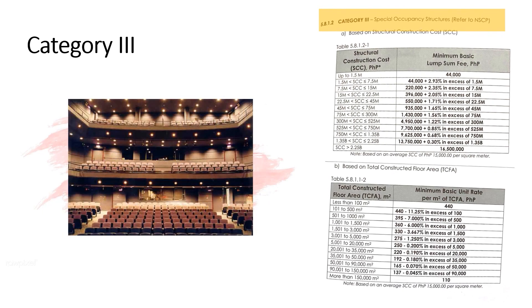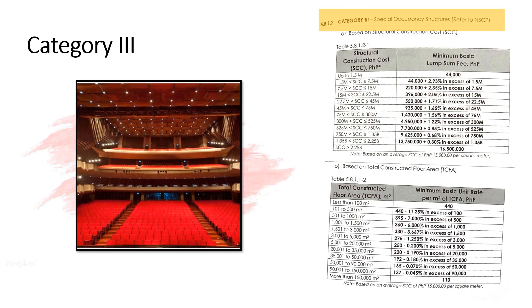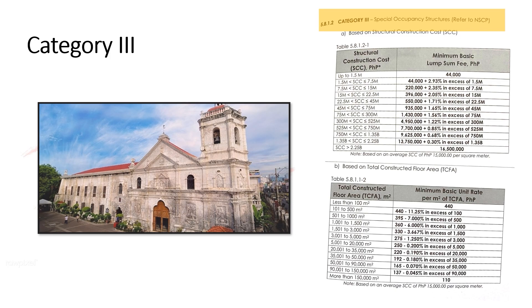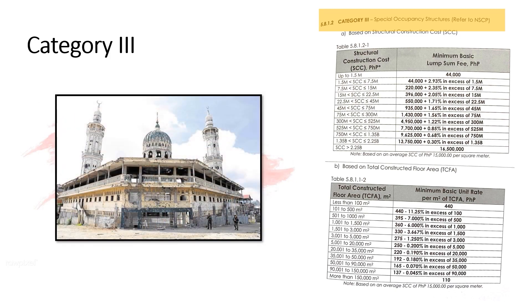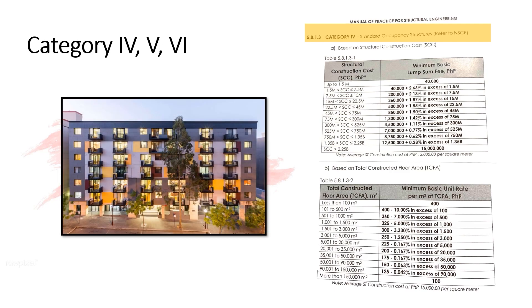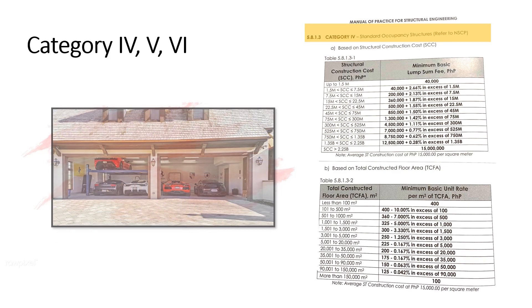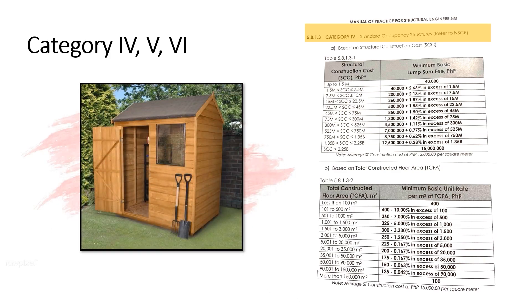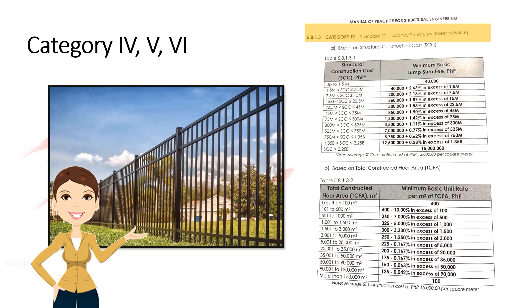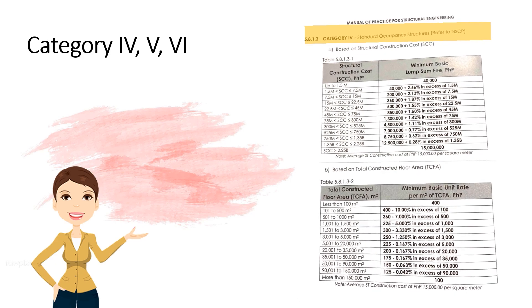You can refer to the right part of the screen to know more about the minimum basic lump sum fee, structural construction cost, and based on total constructed floor area. Categories 4, 5, and 6 are Standard, Miscellaneous — which are other structures not falling under Categories 1, 2, and 3 — Special Structures, Complex Structures, and Infrastructures. To know about the schedule of minimum fee based on structural construction cost and based on total constructed floor area, you can also refer to the right part of the screen.